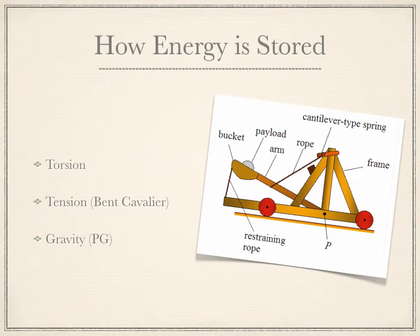How is this energy stored? Again, this depends upon the type of catapult you use. In our version of the catapult, there are three main types stored: torsion, tension, and gravity. Torsion is in the rope, as is tension, but the tension is in a bent bow form — almost a bow mounted on the top of the catapult with ropes tied to the ends. The energy is stored along the wood of the arm as well as through the ropes.